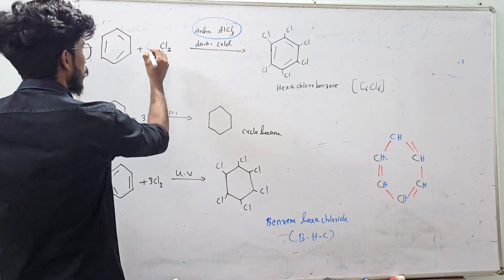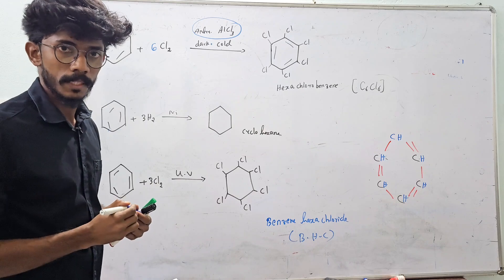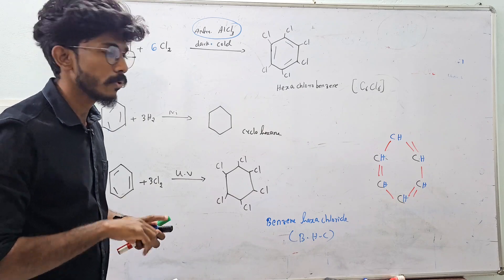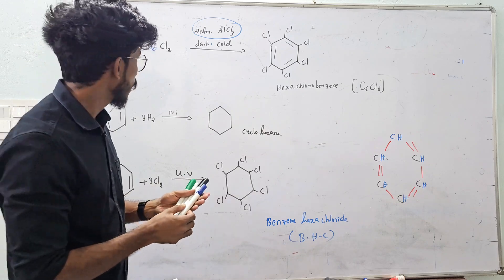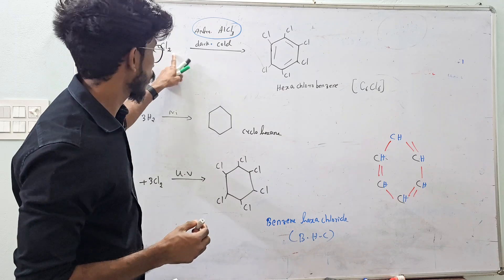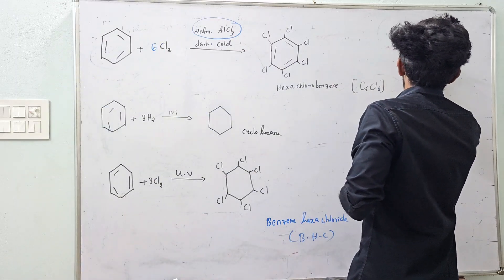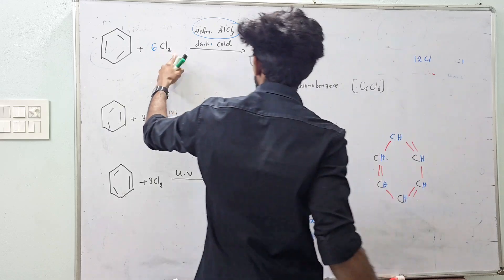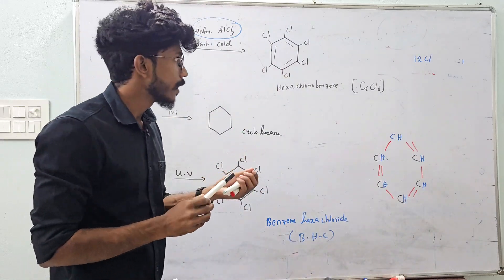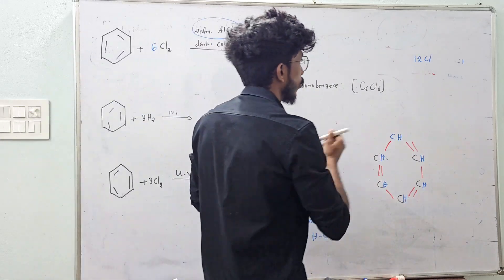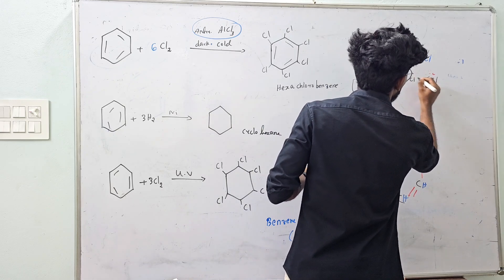This involves 6Cl2 — that is 12 chlorine atoms total — in a reaction with benzene. There is R-chlorine involved. In this reaction there is R-chlorine reacting with benzene.